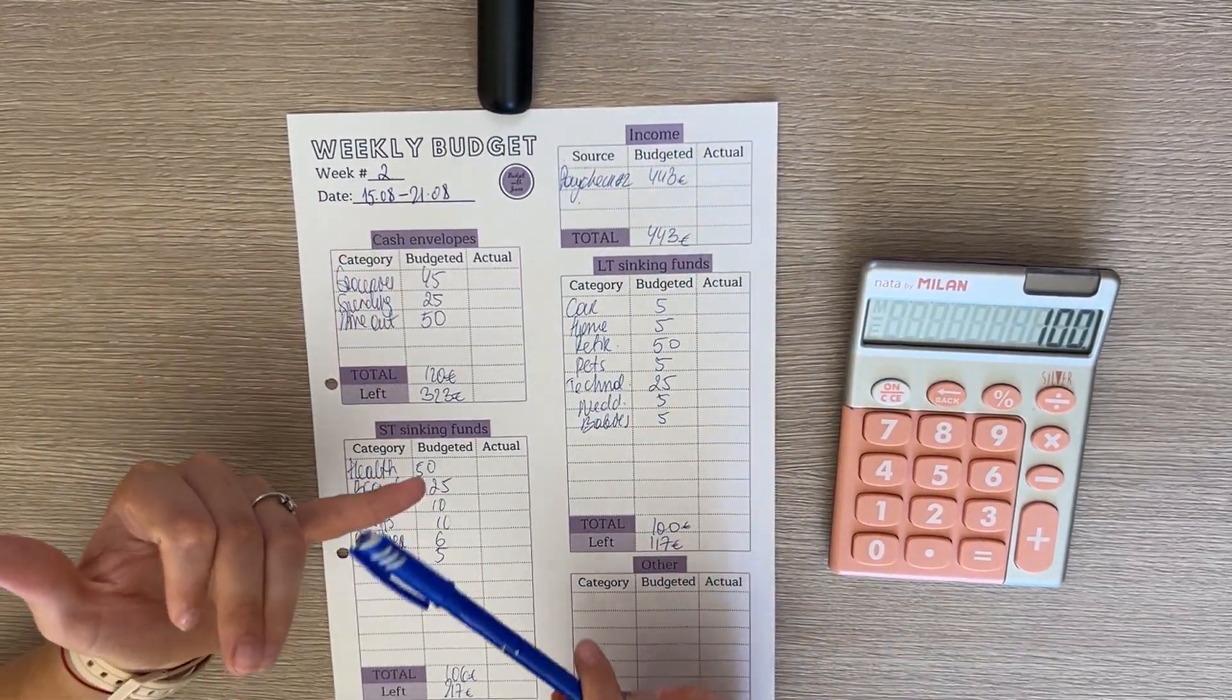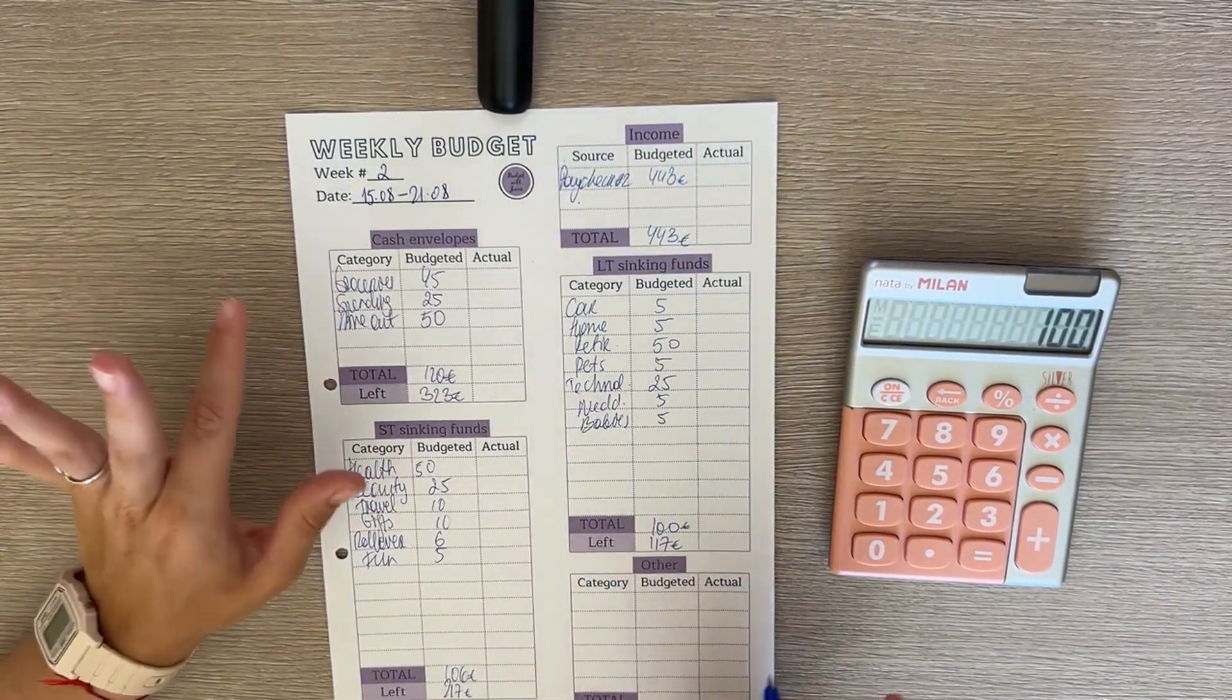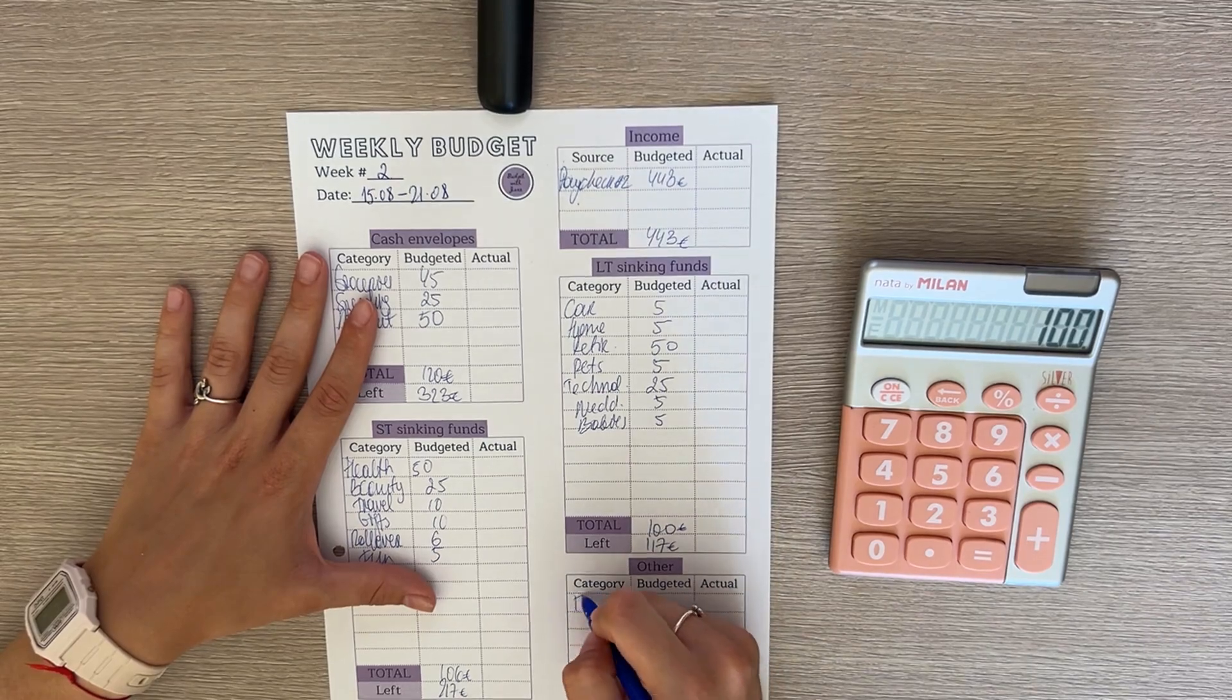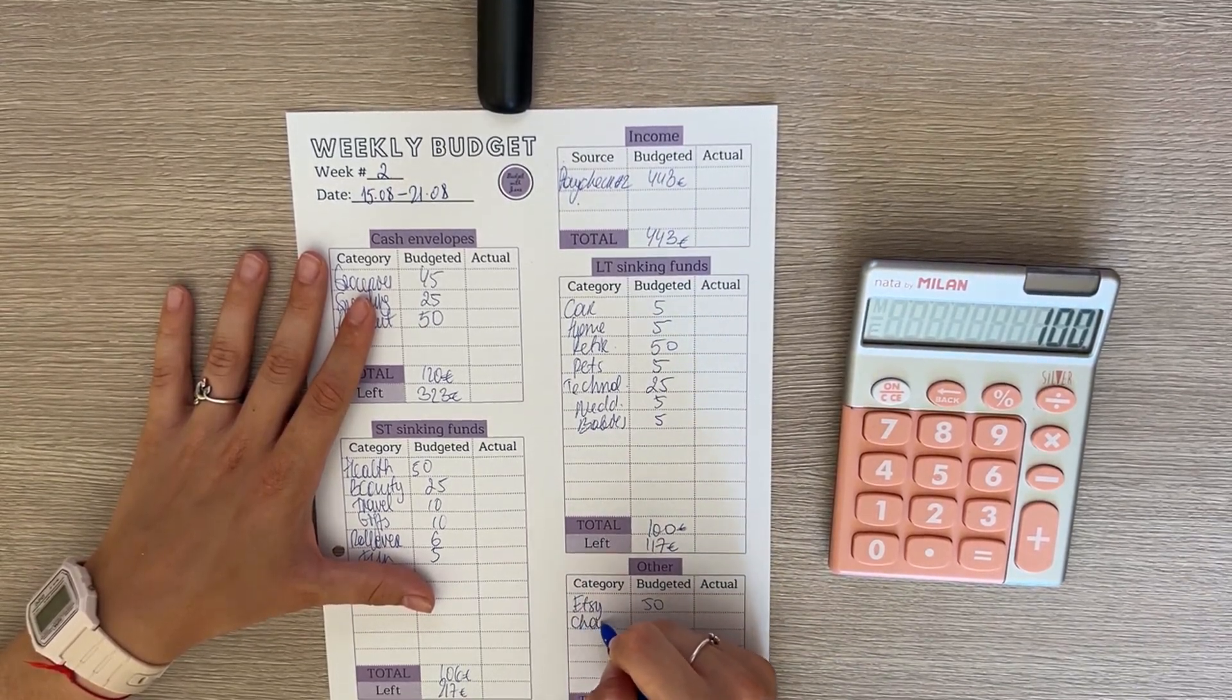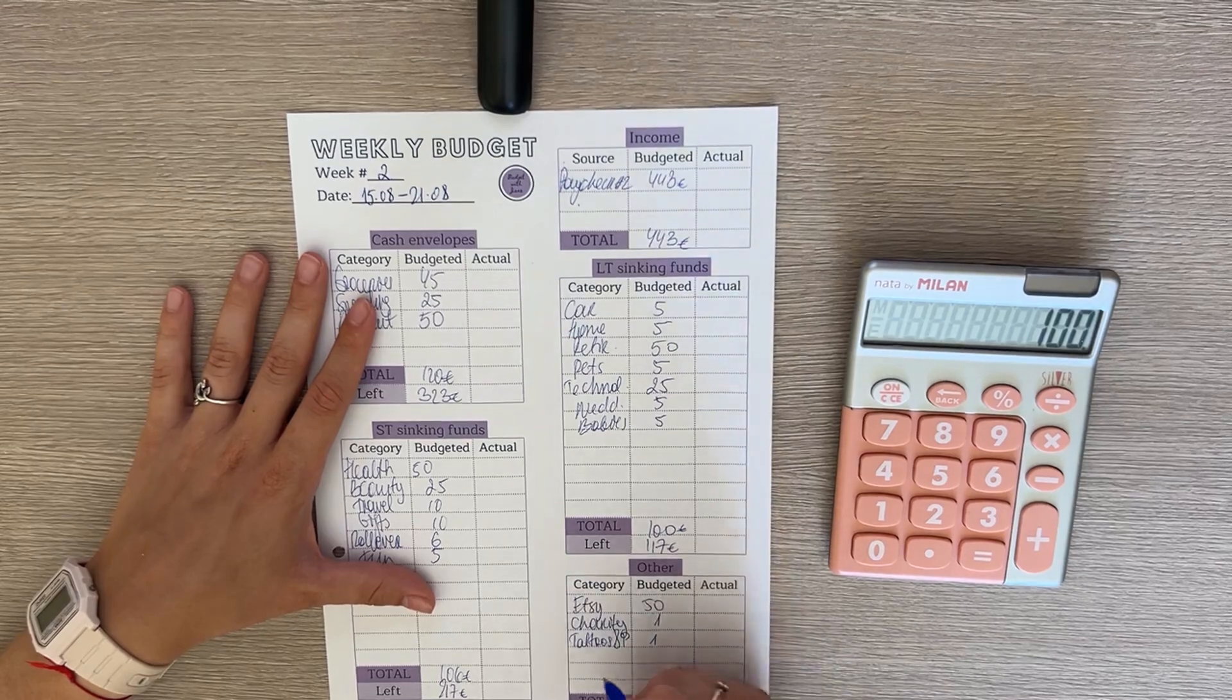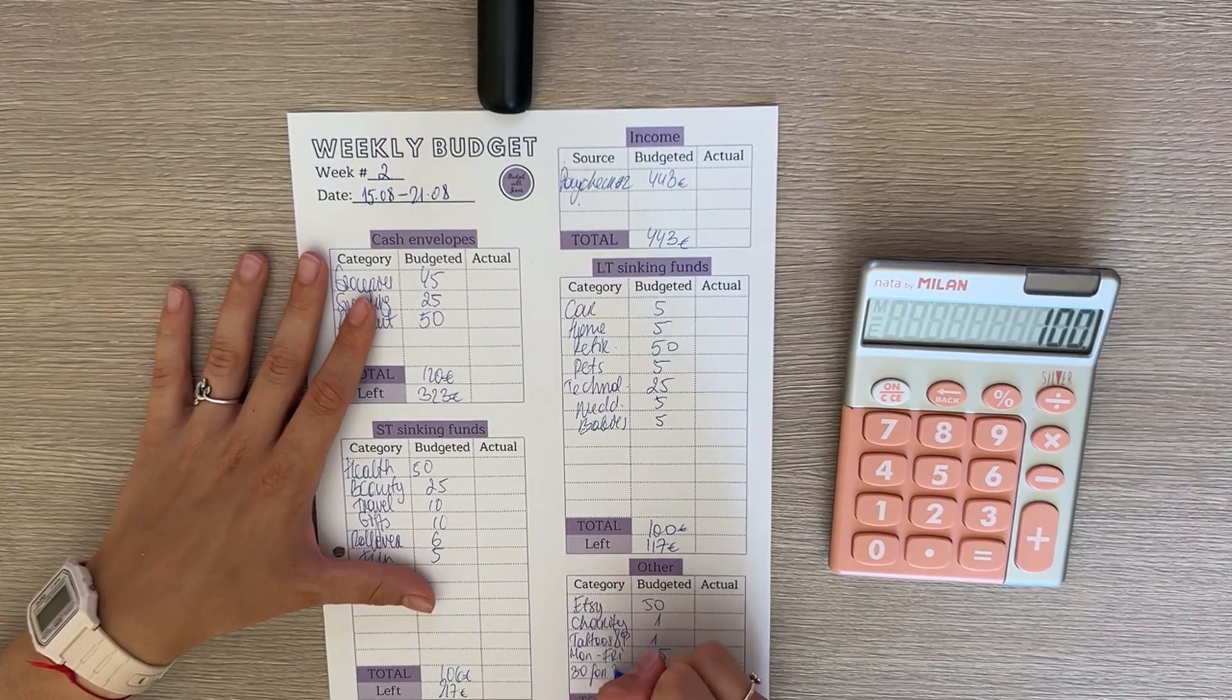So here we have fully funded Christmas for this year so we're not stuffing that anymore, and we also have funded our rainy day challenge which was building my emergency fund. We're stuffing Etsy with 50, charity is going to get 1, and tattoos and piercings is also going to get 1. And then Monday to Friday is going to get a regular 15, and then 30 for 30 is going to get 50.